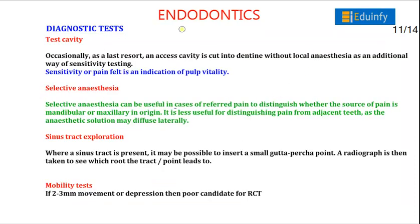Other diagnostic tests include the test cavity, where an access cavity is cut into dentine without local anesthesia; sensitivity or pain indicates a vital pulp. Selective anesthesia can be used in cases of referred pain to distinguish whether the source is mandibular or maxillary, though it is less useful for distinguishing pain from adjacent teeth as the anesthetic solution may diffuse laterally.